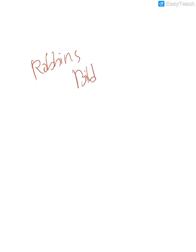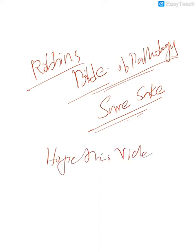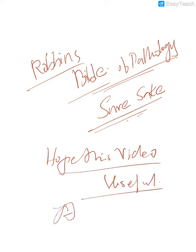Robbins is the Bible of pathology — it is a must-read book. Whether you have time or not, you should read Robbins. I have told you how to read it and I hope this video will be useful. If you have any doubts, please ask me. All the best — smart reading will only help us remember the right things. How much quantity you read doesn't matter; how you read a page is what is going to matter. Thank you very much.